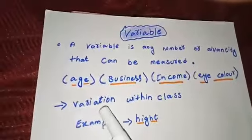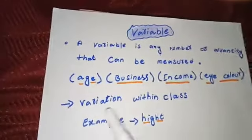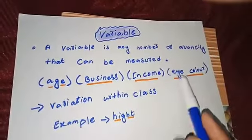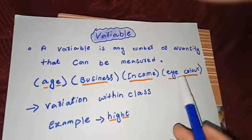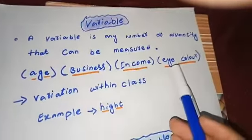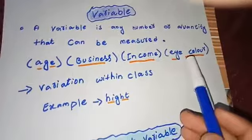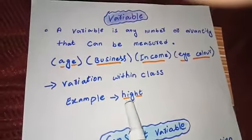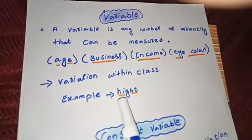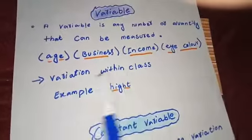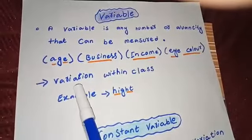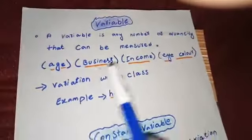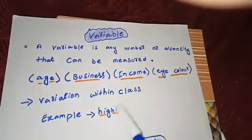For example, within a class there are many students, and every person may have a different eye color — some have brownish, some have black, and some have yellow. There is also a difference in heights; some people have five foot six inches and others have different heights. This variation means differentiation between students — every student has different characteristics, and these characteristics are the quantities and numbers we measure, like height.